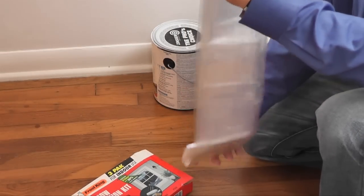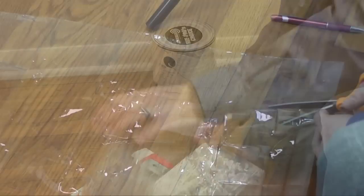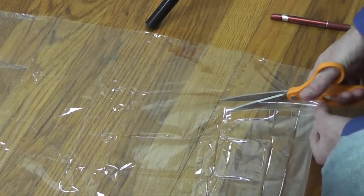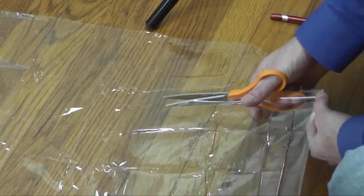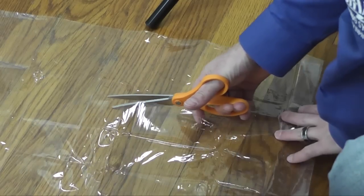Unfold the window film from the insulation kit and cut to the dimension of your first window. Remember, you can always trim the excess later, but if you cut the piece too small, you will have to scrap it and cut a brand new piece.